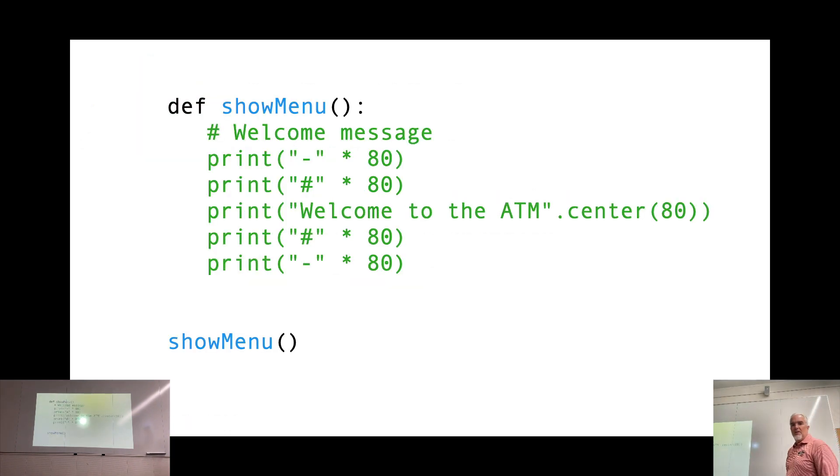Here's a real-life example of a function, a custom function, that has no parameters defined. No parameters. Notice I still have empty parentheses, and a colon. Here's the code block.